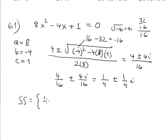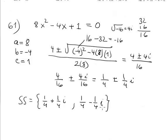The solutions are 1/4 + 1/4 i and 1/4 - 1/4 i — two conjugates. Always, the solution for a quadratic equation comes in a pair of conjugate solutions.